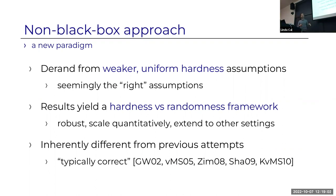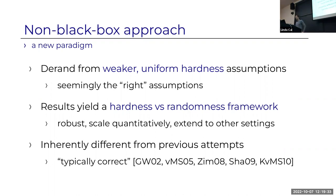This yields a new framework for hardness versus randomness. It's robust to perturbations in the assumption—you get the same perturbation in the conclusion. It scales quantitatively in all directions. You can extend it to proof systems, small space, and parallel algorithms. It works just as well as the original framework. This idea of using the input to produce pseudorandomness for that input isn't radical—it's the first thing you'd try, and it has been tried for several decades. But this framework is completely new, inherently different from previous attempts, and gets much stronger results from weaker assumptions.